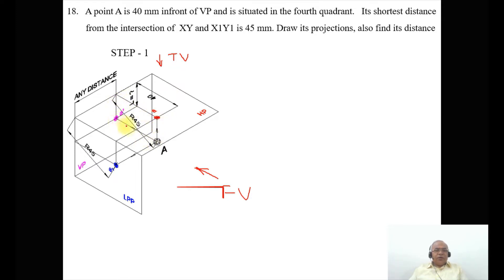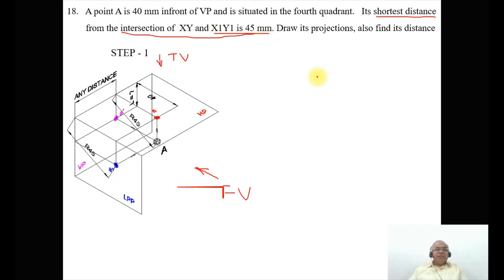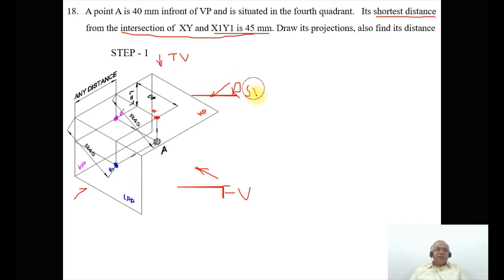The distance from A-prime to capital A, as seen from the top view, is perpendicular to the horizontal plane, so the image falls on HP, giving us small a. Since no distance is given with respect to the profile plane and it mentions the shortest distance, the shortest distance from the intersection of XY and X1Y1 is 45 mm. Looking from the side view, since it is the LPP, we should look from the right side view (RSV).